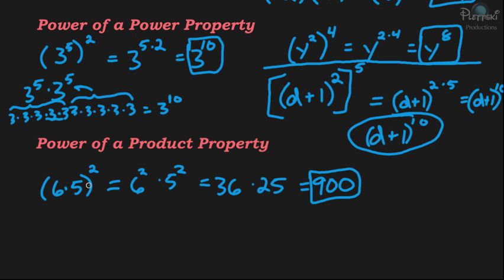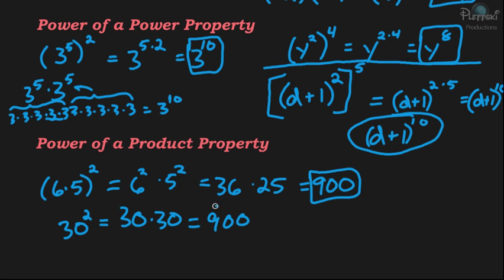Another way to solve it, since we have numbers, is to simply multiply 6 times 5 to get 30 and then square it: 30 times 30 is also 900. But for this lesson, we want to explore the power of a product property — distributing the square into each of the terms being multiplied.